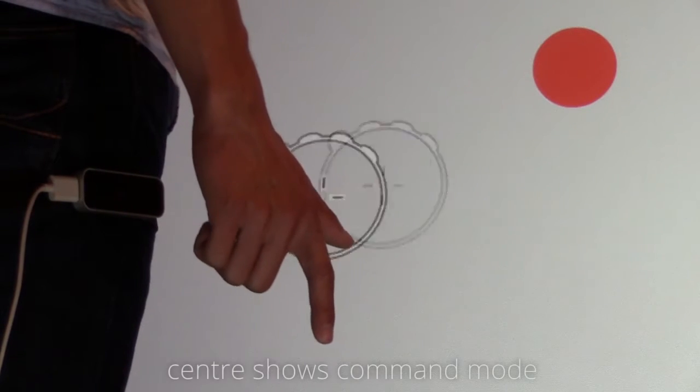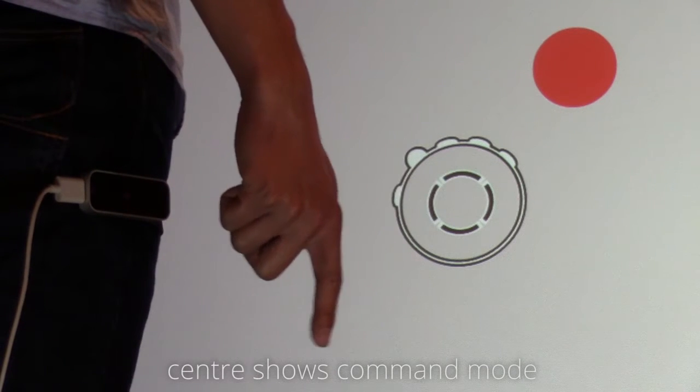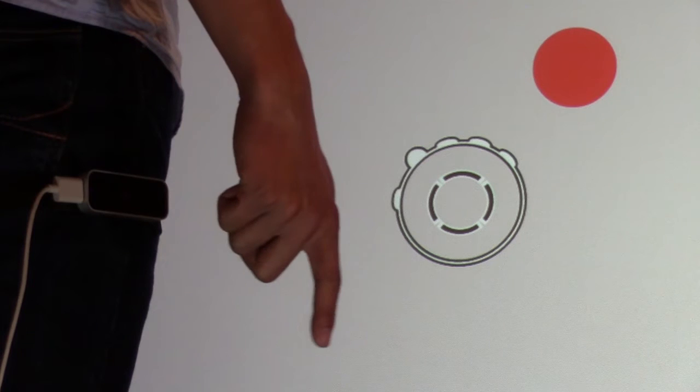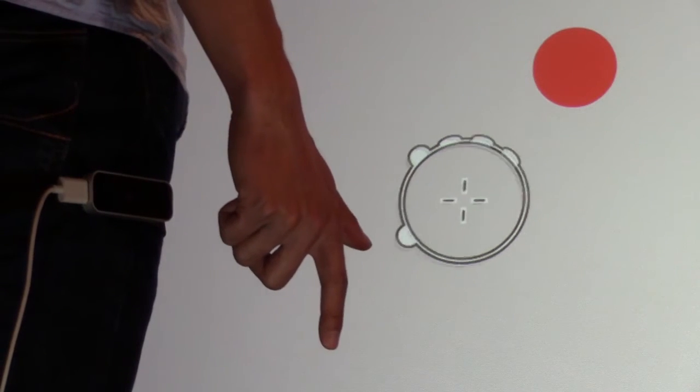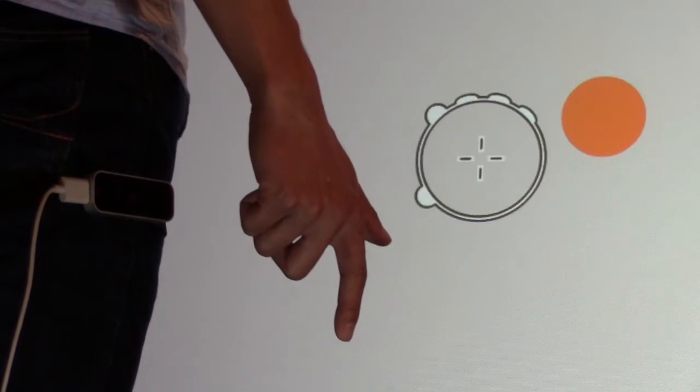The center indicates the command mode such as pointing, clutching, clicking, and neutral.